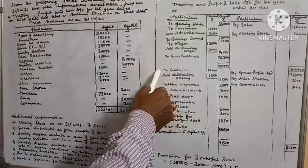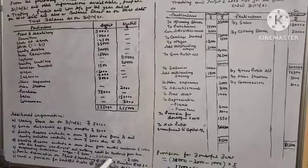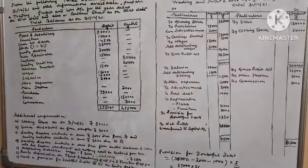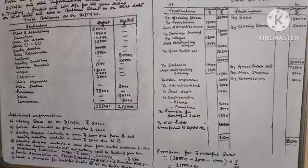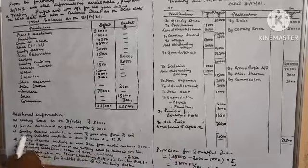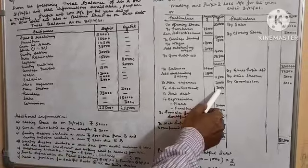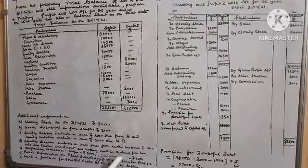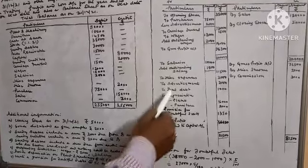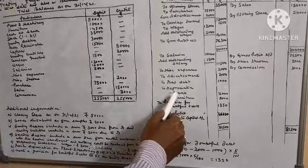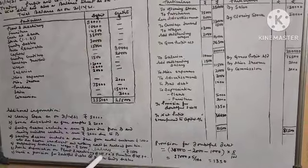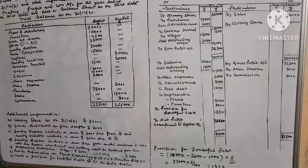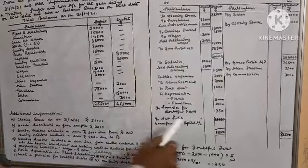Profit and Loss Account items: To salary 10,000 plus outstanding salary 1,500 equals 11,500. To miscellaneous expenses 2,000 from trial balance. To advertisement — goods distributed as free sample — 2,000. A customer who is insolvent, nothing could be realized: bad debt 1,000. Depreciation on plant: 50,000 at 10% equals 5,000. Depreciation on furniture: 10,000 at 20% equals 2,000.